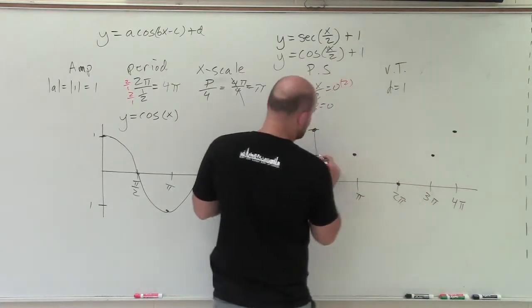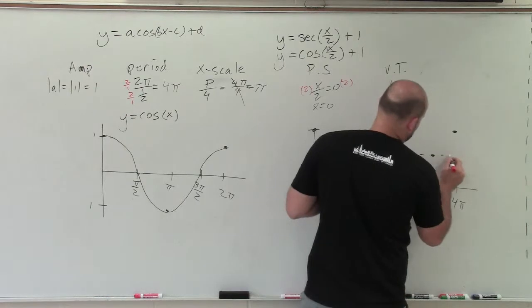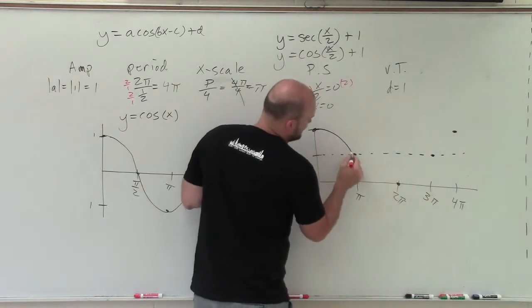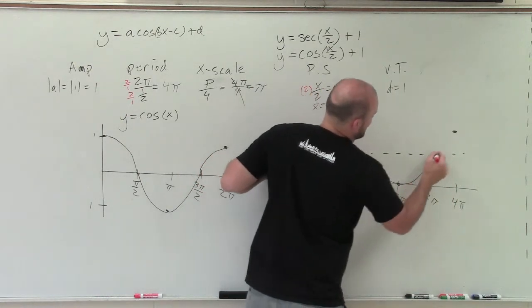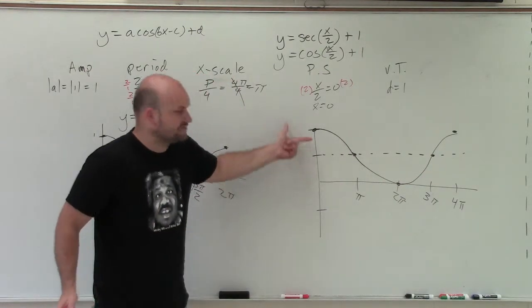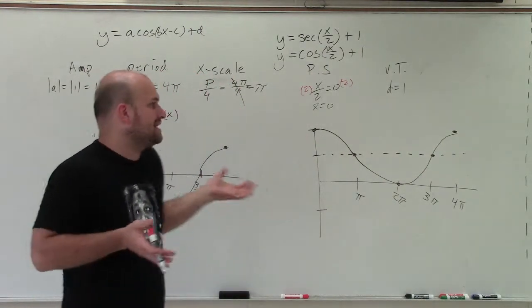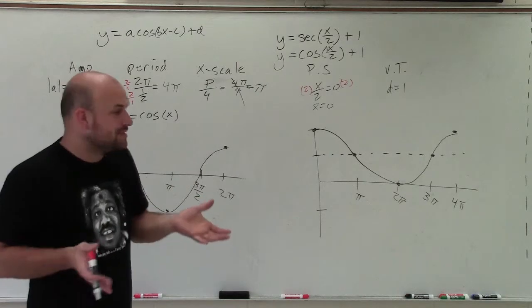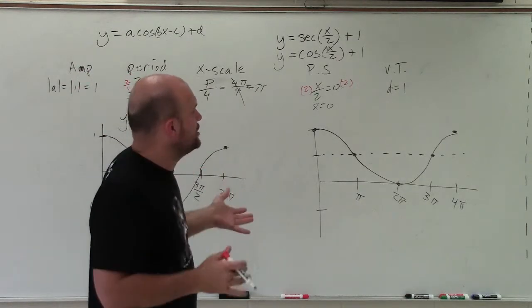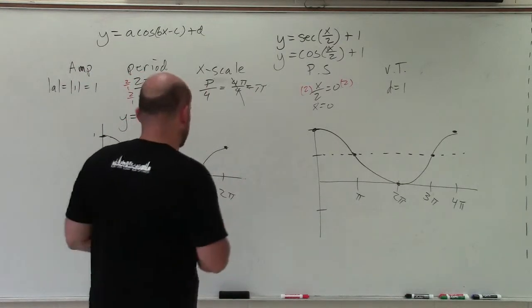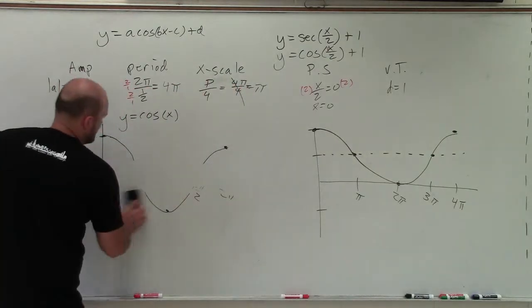And a lot of times, what I like to do is just draw a dotted line, just to kind of remind me that that x-axis has shifted upwards, right? The x-axis shifted upwards. So I like to just draw the dotted line in there. It's not a part of the graph. But I draw the dotted line there, just so I know that's where the old intercept would be.